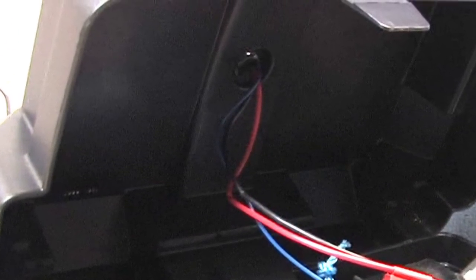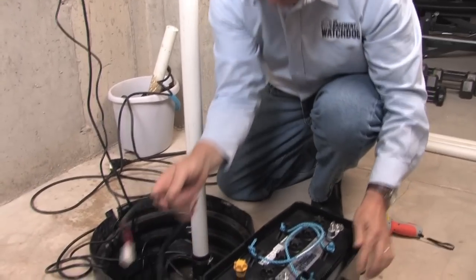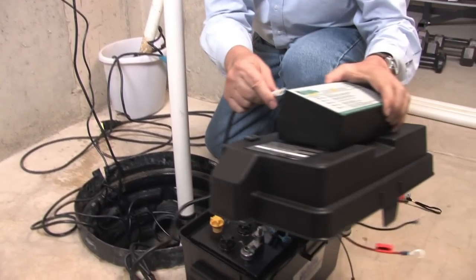Thread the wires on the backup controller through the hole in the top of the battery box. To connect the backup pump, plug the pump wires into the connector on the back of the control unit.